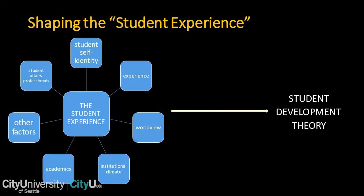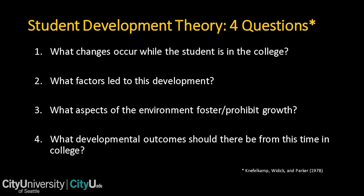Social scientists looked at student self-identity, experiences, worldview, what shapes them growing up, what the institutional climate is like, and what academics are like. Student affairs professionals started appearing during this time. Four big questions emerged: What changes occur while a student is in college? What factors led to this development? What aspects of the environment can foster or prohibit growth — professionally, personally, intellectually? And what developmental outcomes should there be from this time in higher education?